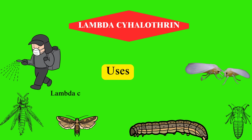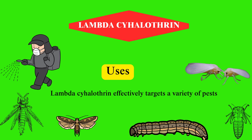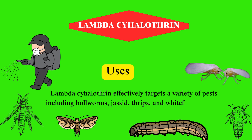Uses. Lambda-cyhalothrin is widely used in agriculture for controlling various pests across different crops. In cotton fields, it effectively targets bollworms, jassid, thrips, and whitefly adults.